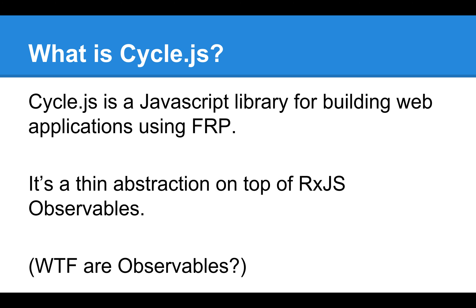What is CycleJS? CycleJS is a JavaScript library that hit 1.0 last week — we're living on the bleeding edge. It's a thin abstraction on top of RxJS, which is short for ReactiveX JavaScript. ReactiveX is a cross-language pattern of observables with good documentation at ReactiveX.io. Observables are a way of representing asynchronous event streams as an object that you can perform functional operations on.